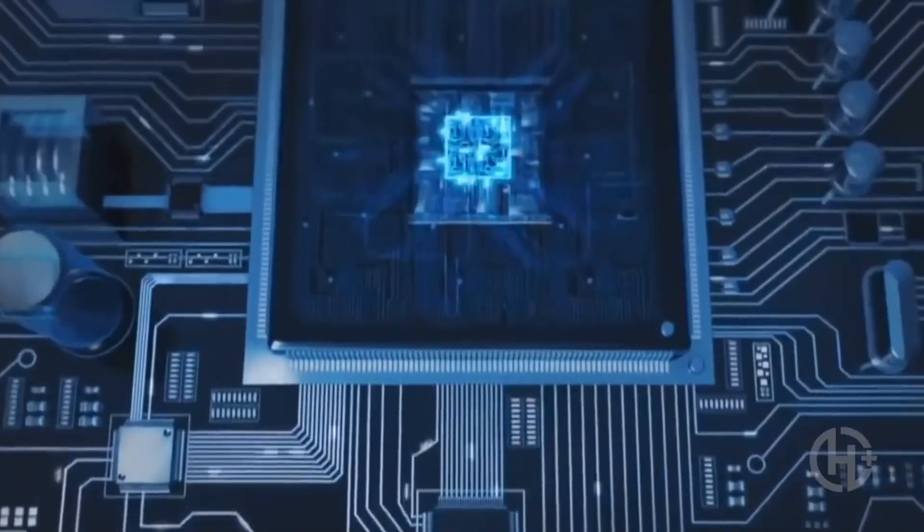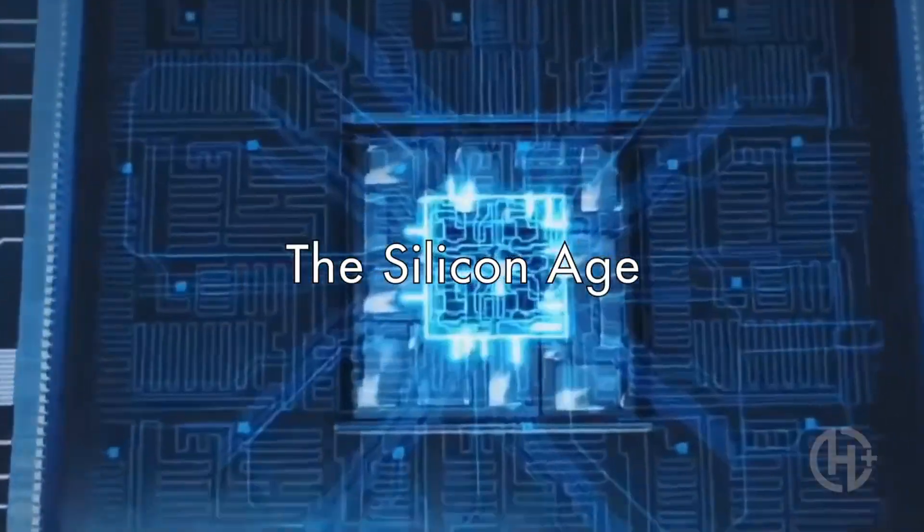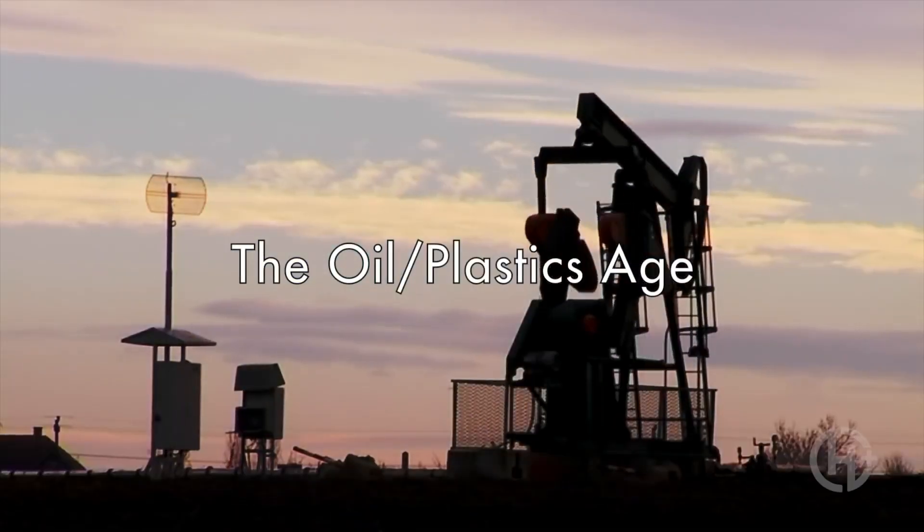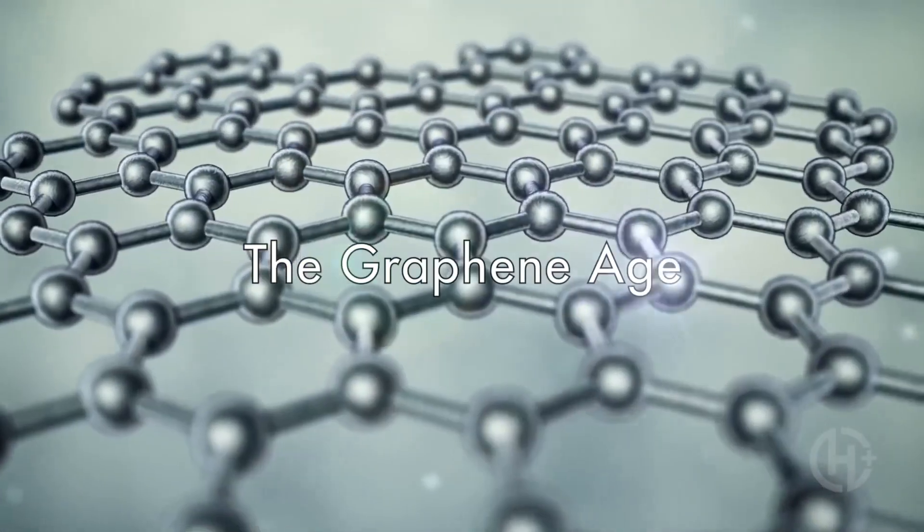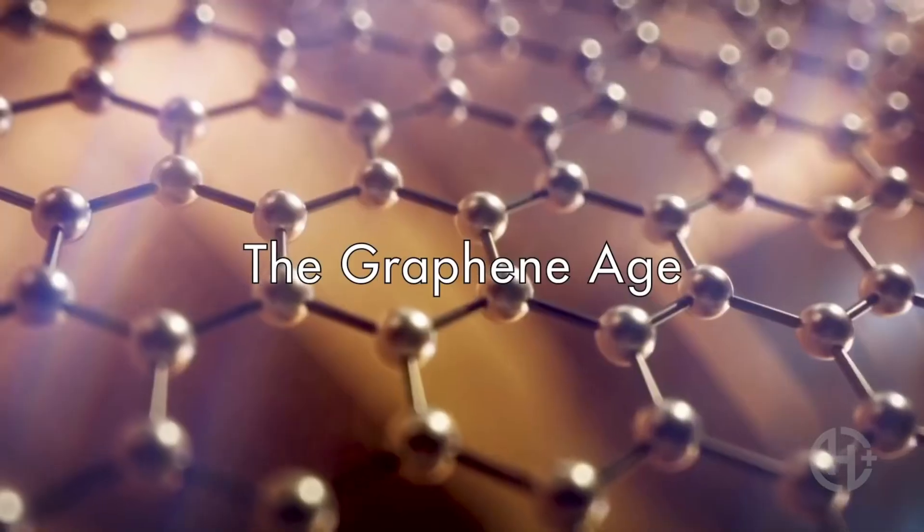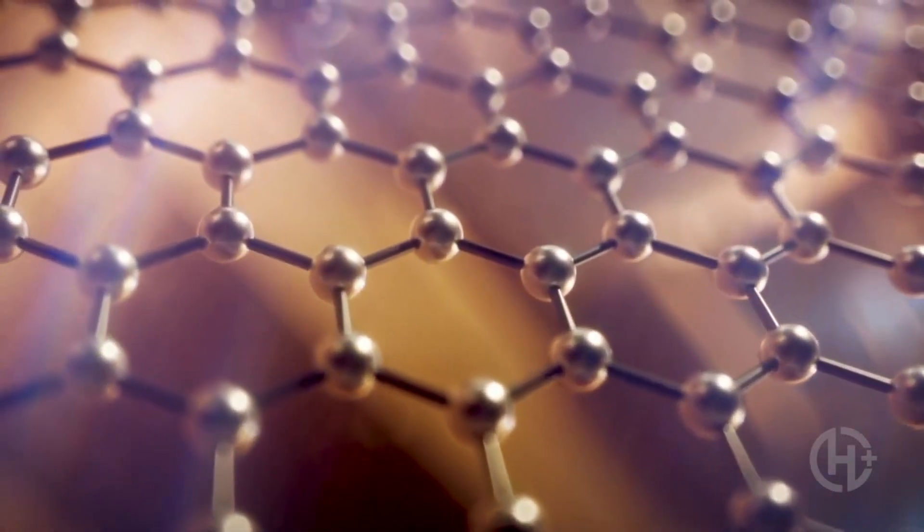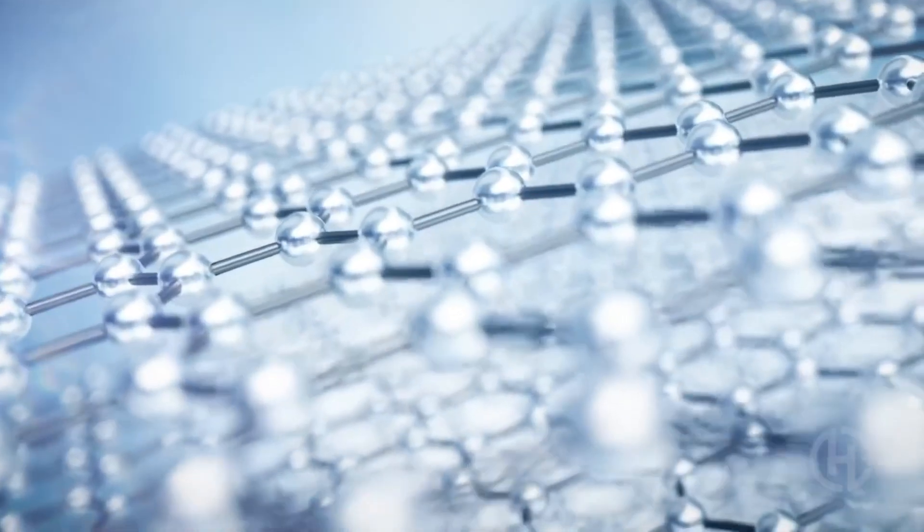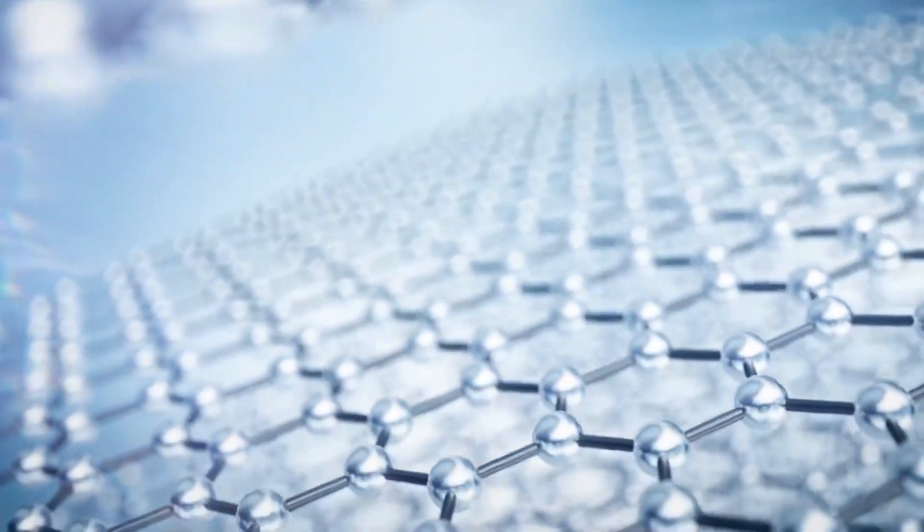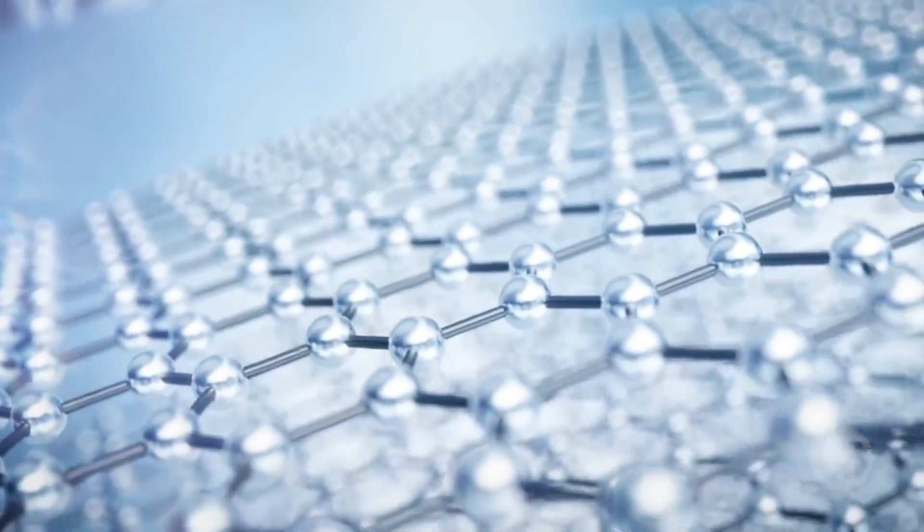And today, we live in what you could call the Silicon Age, the Oil Age, and quite possibly, the Graphene Age. The term Graphene Age is not an exaggeration, because it's a material that could be so influential to society, future historians will use it to define the age in which we live.